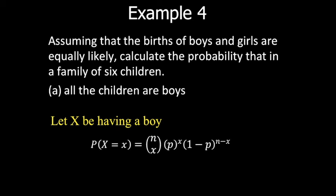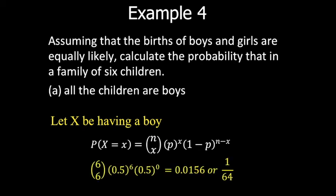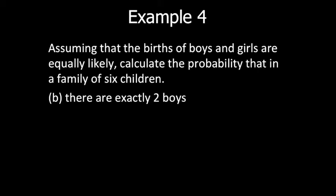For part (a), all children are boys: n = 6, x = 6, p = 0.5, and (1−p) = 0.5. So P(X=6) = C(6,6) × (0.5)^6 × (0.5)^0 = 1/64. For part (b), exactly two boys: P(X=2) = C(6,2) × (0.5)² × (0.5)^4. Using a calculator, this gives approximately 0.234.